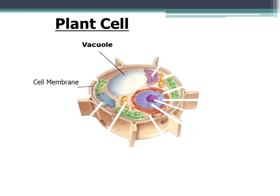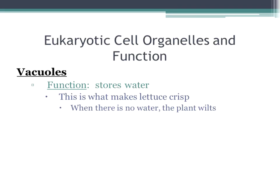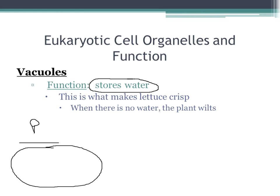Now the plant cell — pretty similar, but I'll go over the differences. This is called a vacuole. Vacuoles are the storage tank — they store water. Animal cells also have vacuoles, but for the plant cell, it's one big huge vacuole that stores water. For animal cells, they're much smaller. They almost look like lysosomes — much smaller and spread out around the cell. One big central vacuole for plant cells, many little ones for animal cells. That's what helps make lettuce crisp. When there is no water, that's when the plant wilts and the vacuole dries up.